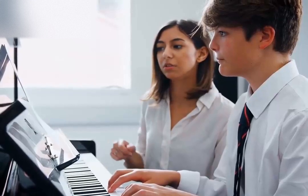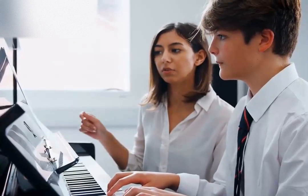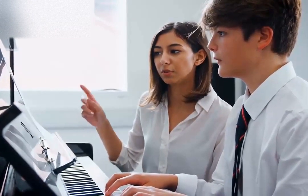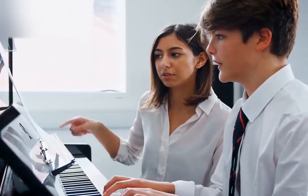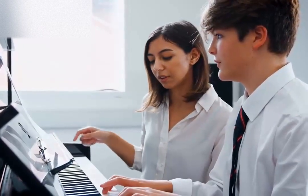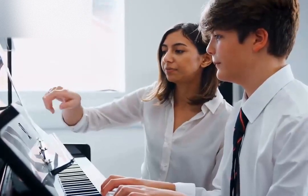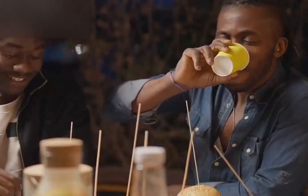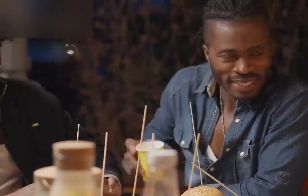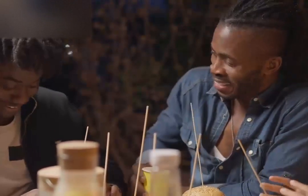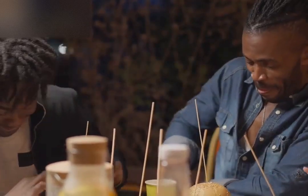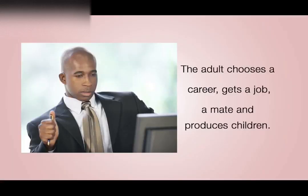Let's start off with adulthood, and we're looking at over 20 years. The stage of adulthood is also marked by significant physical and social changes. The adult chooses a career, gets a job, finds a mate or a partner, and produces children.